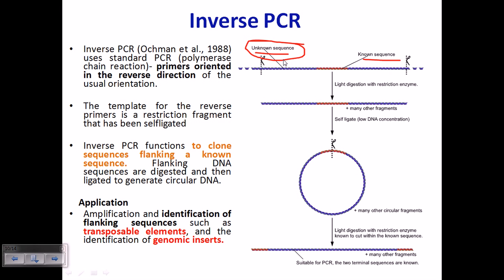In conventional PCR, we must know the sequence because knowing the sequence is important to design the primers. If you don't know the sequence, how can you design the primers? Before designing the primers, we must know the sequence. But in this case, we don't know this segment of the sequence — it is unknown to us. So how can we amplify the unknown sequence?